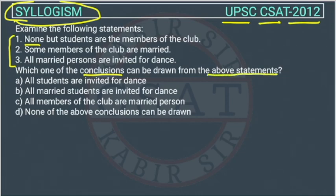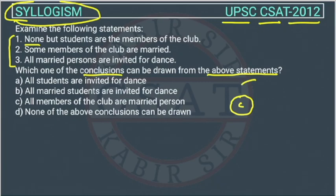We will solve it through a Venn diagram. The first statement is: none but students are members of the club. This means only students can be members of the club. The Venn diagram will be like this — none but students are members of the club.